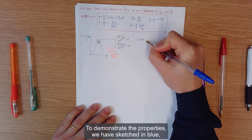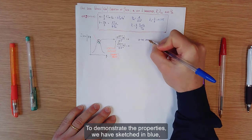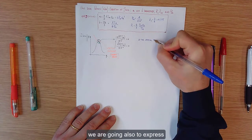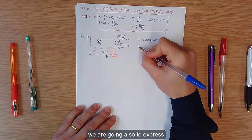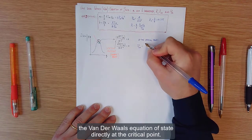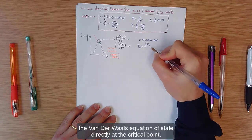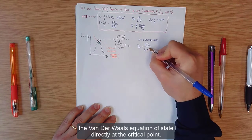To demonstrate the properties we have sketched in blue we are going also to express the Van der Waals equation of state directly at the critical point.